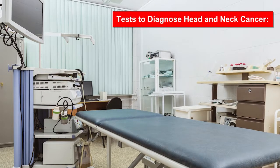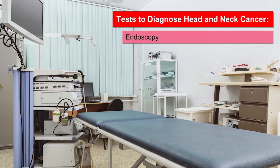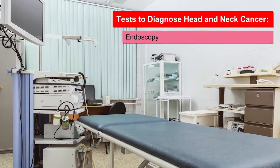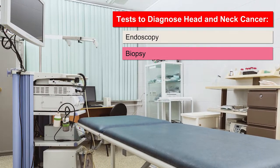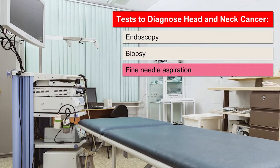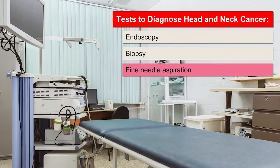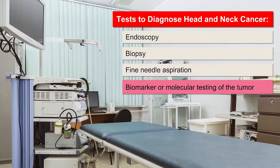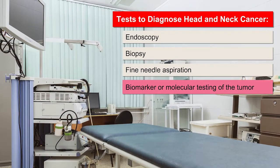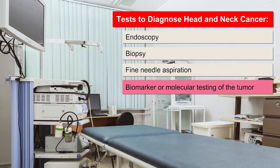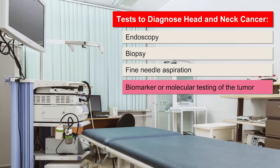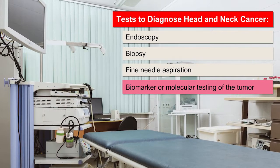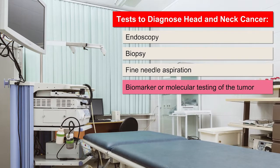Your doctor may order some of these tests. Endoscopy: a thin, lighted tube is inserted through the nose and down the throat so your doctor can see inside the head and neck. Biopsy: a sample of tissue is removed to check for cancer. Fine needle aspiration is a type of biopsy done with a small needle, often used to assess lumps in the neck. Biomarker testing, or molecular testing of the tumor, may test for a protein called P16, or for HPV. The results help your doctor decide on the best treatment. Some tumors are also tested for the Epstein-Barr virus.